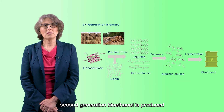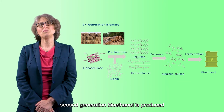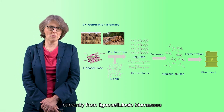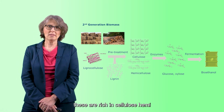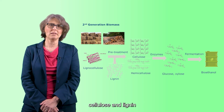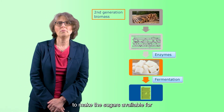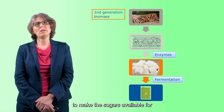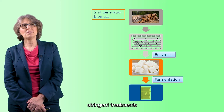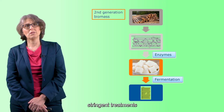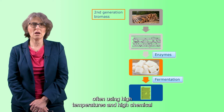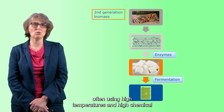Second generation bioethanol is produced currently from lignocellulosic biomass. These are rich in cellulose, hemicellulose and lignin. To make the sugars available for fermentation, the biomass needs stringent treatments, often using high temperatures and high chemical loadings.